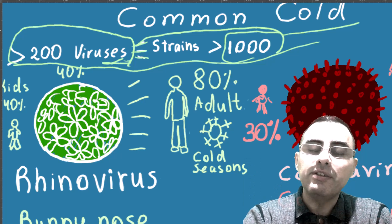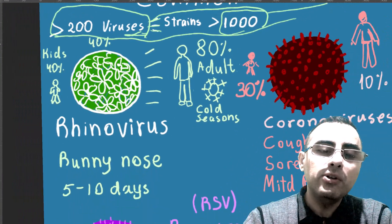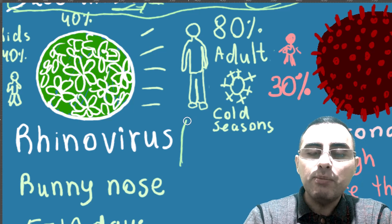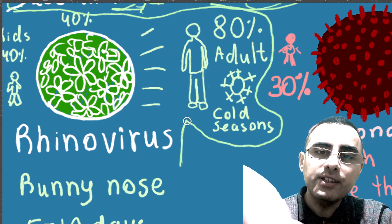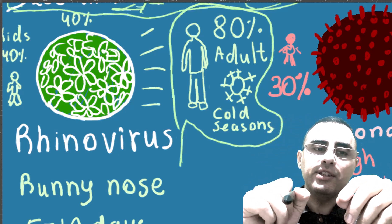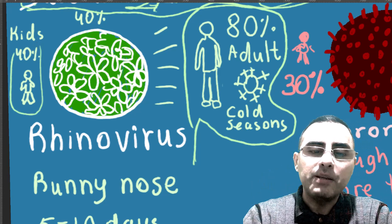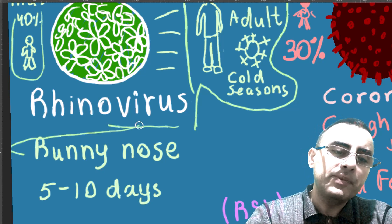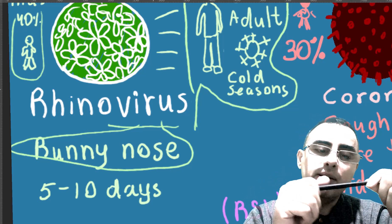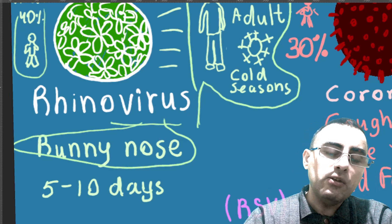Let's start with the most common virus which causes the common cold: rhinovirus. Rhinovirus is present in 80% of cases. So if an adult has the common cold, there is an 80% probability it's rhinovirus. If a child has the common cold, there is a 40% probability it's rhinovirus.